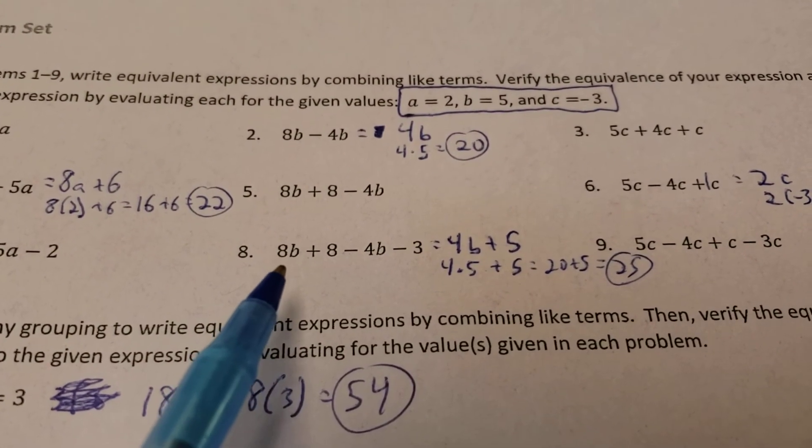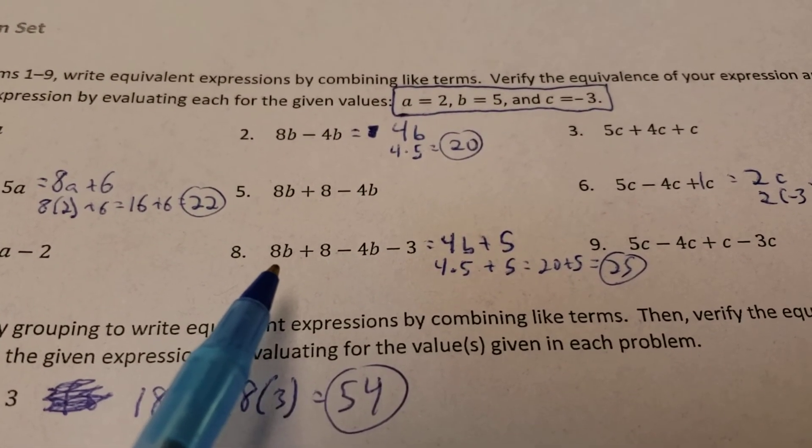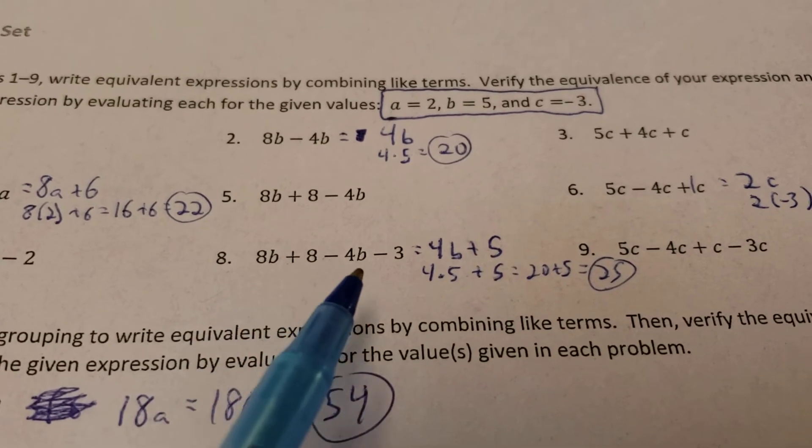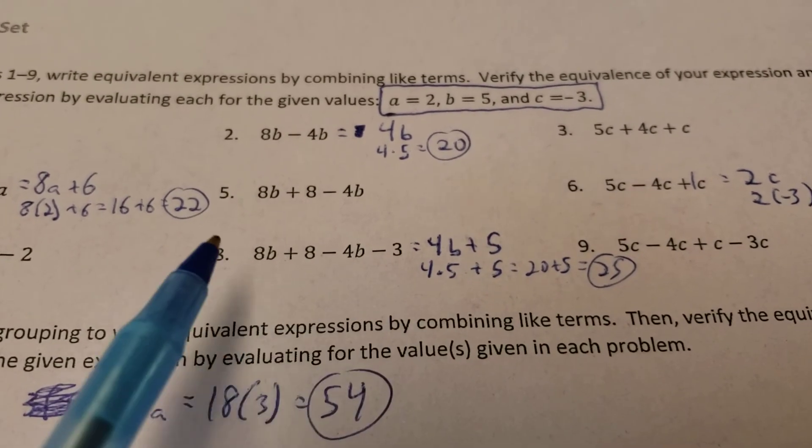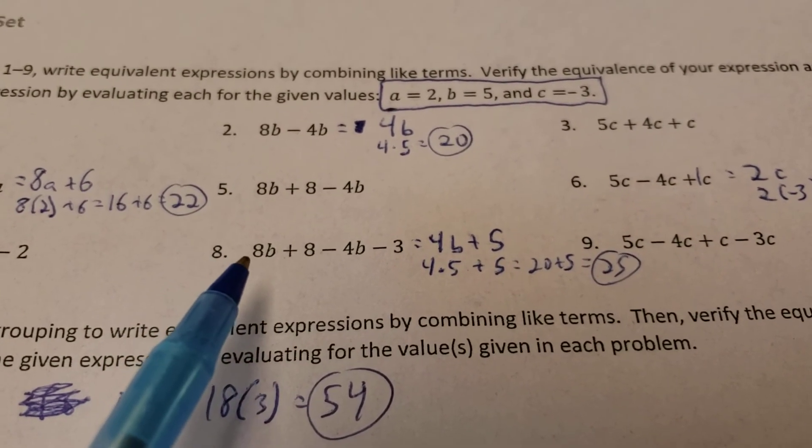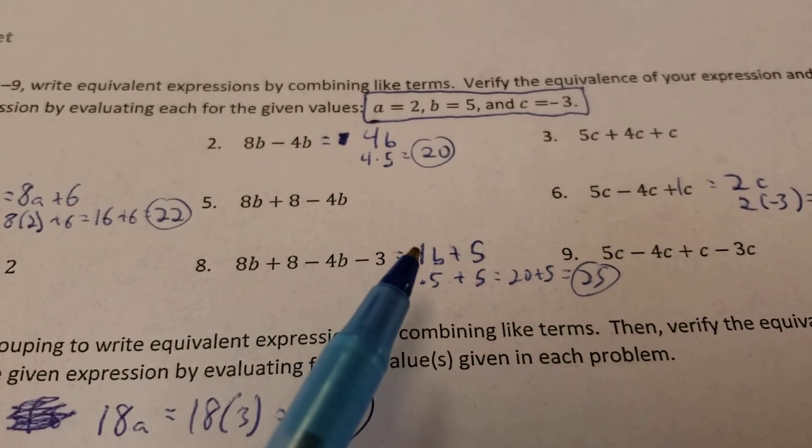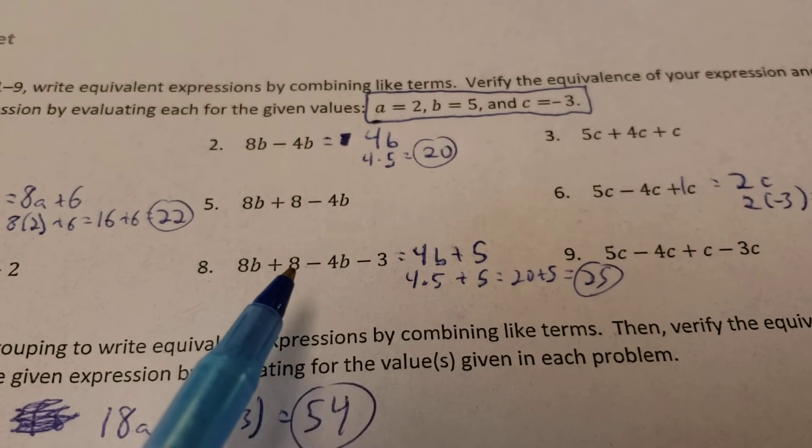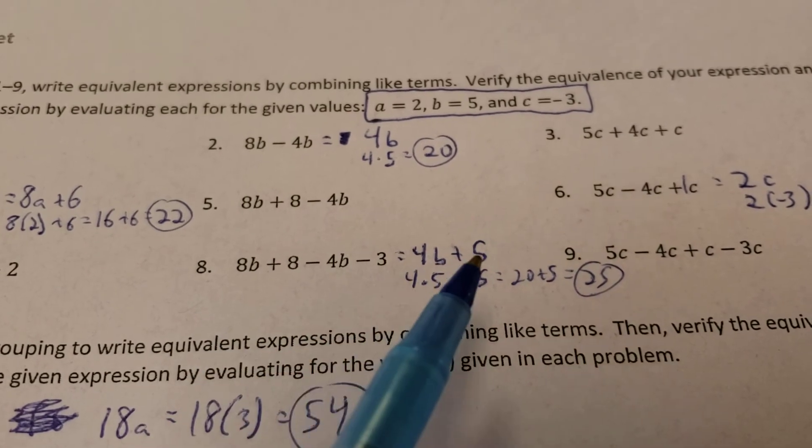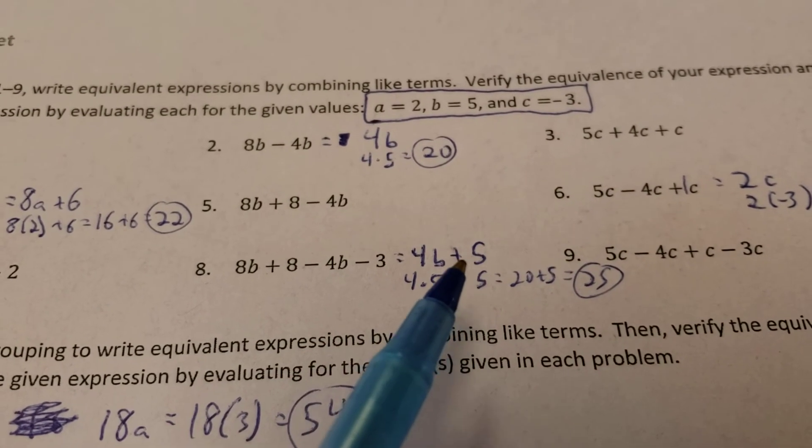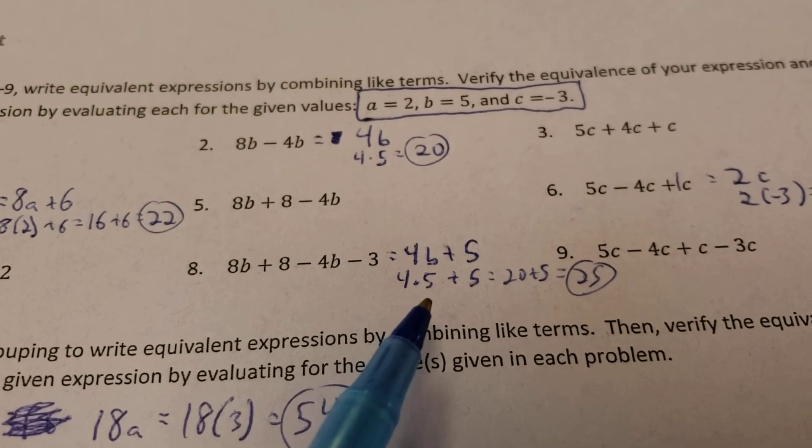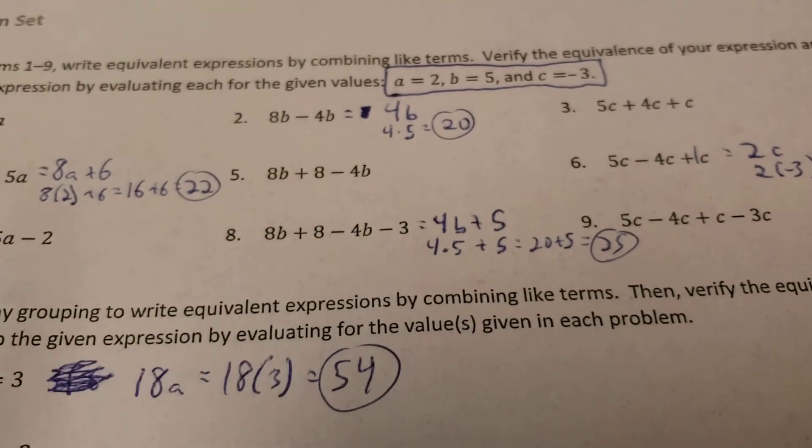Alright, for number 8, I got 8 times b, plus 8, minus 4b, minus 3. So I got regular numbers and the b numbers here. So let's deal with the letters first, like we usually try to do. 8b minus 4 gives me 4b. 8 regular numbers, 8 minus 3 gives me a positive 5. So 4b plus 5. And of course, we already know that 4 times 5 is going to be 20. Plus 5 gives you 25.